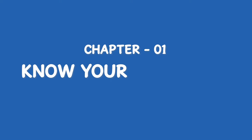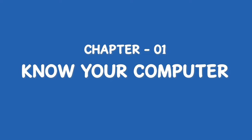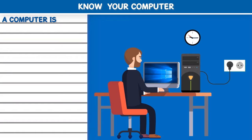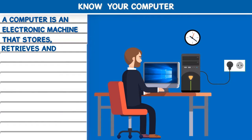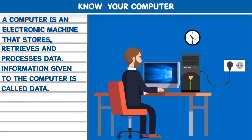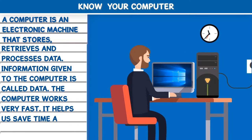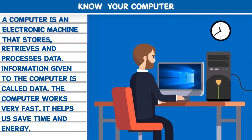Chapter 1: Know your computer. A computer is an electronic machine that stores, retrieves and processes data. Information given to the computer is called data. The computer works very fast. It helps us save time and energy.